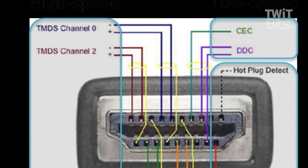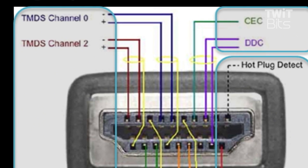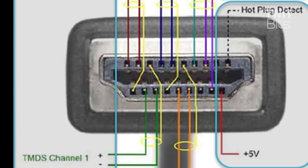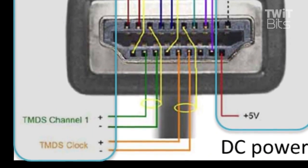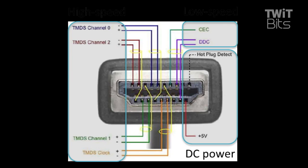On there, there are 19 pins, basically broken up into three different groups. There's high speed, which is really where the video, the audio, and all that control information lives. There's low speed, which is where the EDID read and writes happen, and also the HDCP encryption. And then there's the low speed DC power, which is really around power-up — that gives it five volts and does the hot plug detect. Those are the three components.